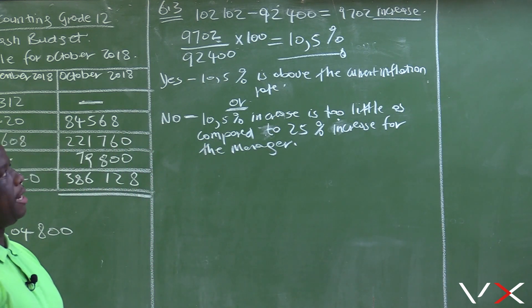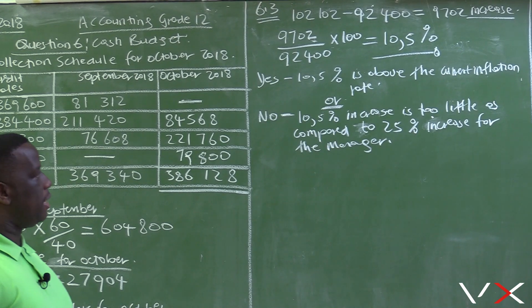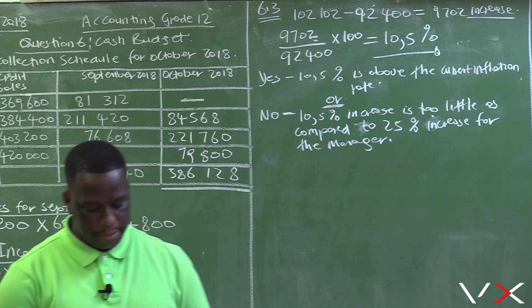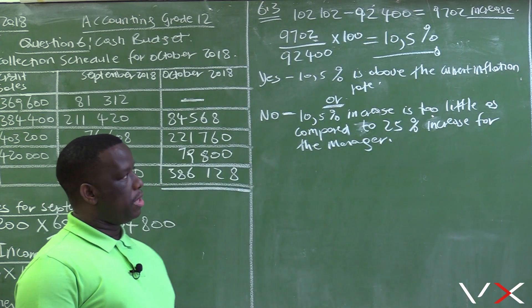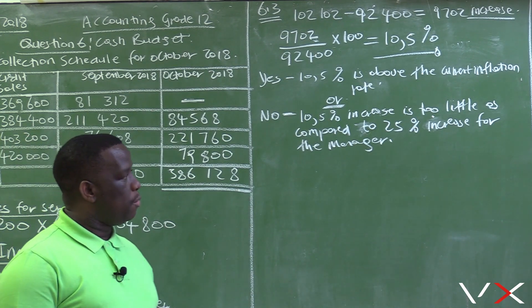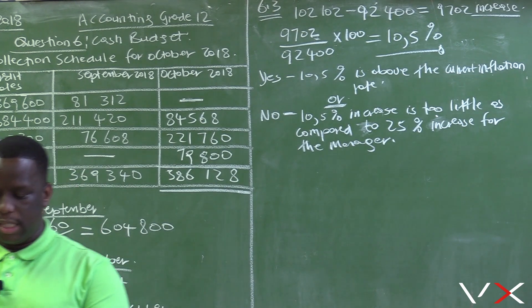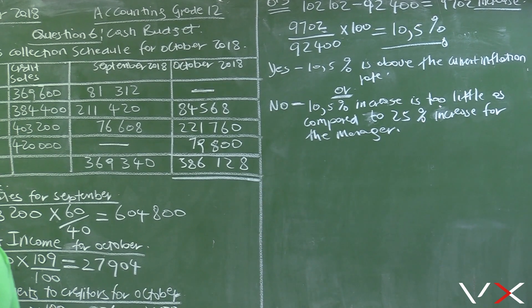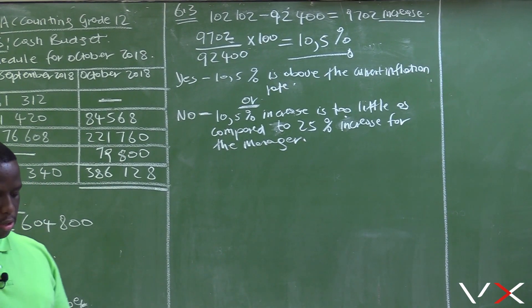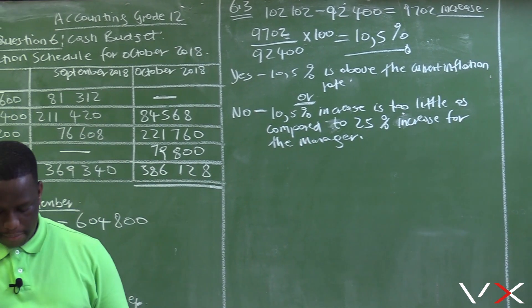Generally, an acceptable answer is that 10.5% is indeed a reasonable increase because it is above the inflation rate. But another student may also argue that the sales assistants will not be satisfied with the 10.5% increase, citing that it is too little compared to the 25% increase for the manager. The manager will be getting 25% in October while the sales assistants only get 10.5%, so one can argue they will not be happy when comparing their percentage increase to the manager's. Generally though, 10.5% is a reasonable increase because it is above the inflation rate.